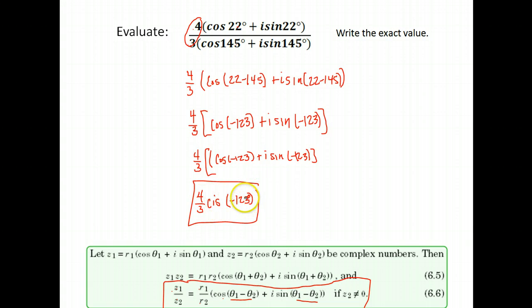There's one other variation you may see. Rather than writing negative 123, typically we write angles with their positive measure. So negative 123 would be this angle here, and if we want to know its positive measure, we just subtract it from 360. So it also could be written as 237 degrees. We could also write this as 4/3 cis 237.